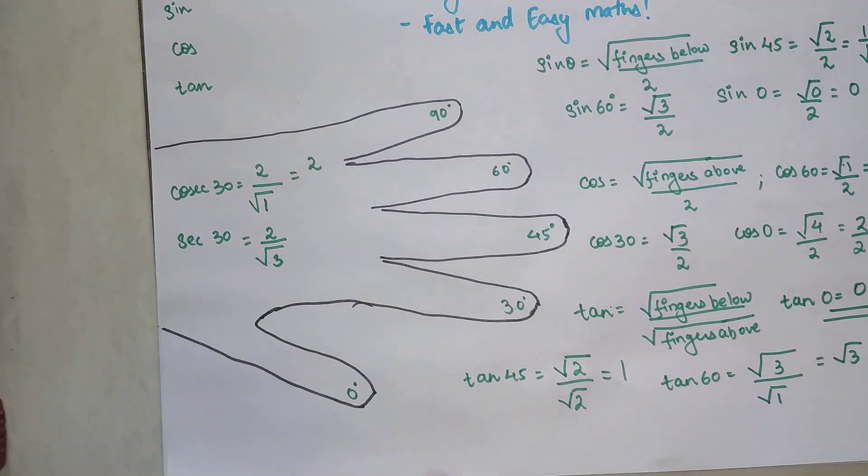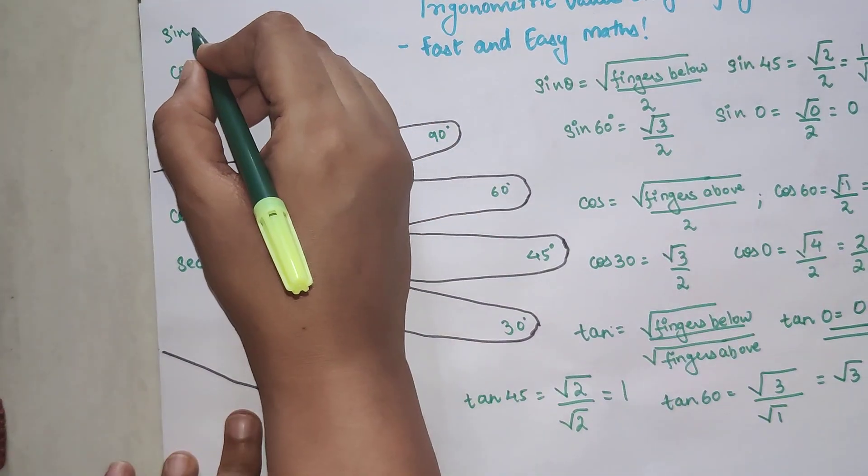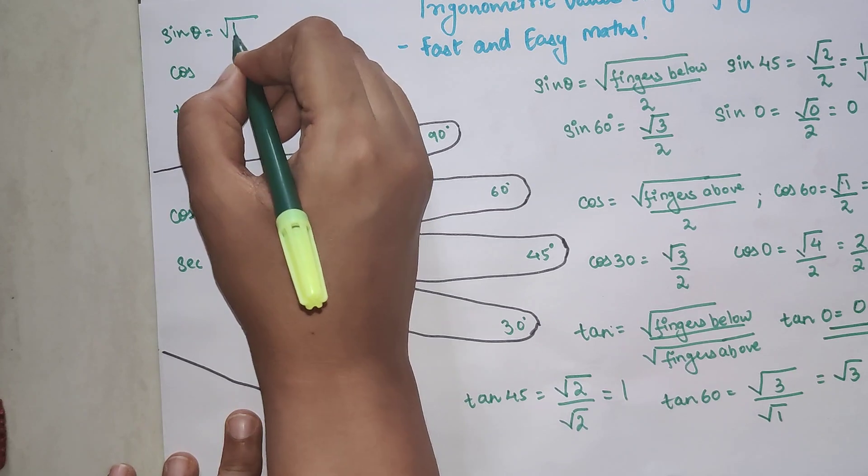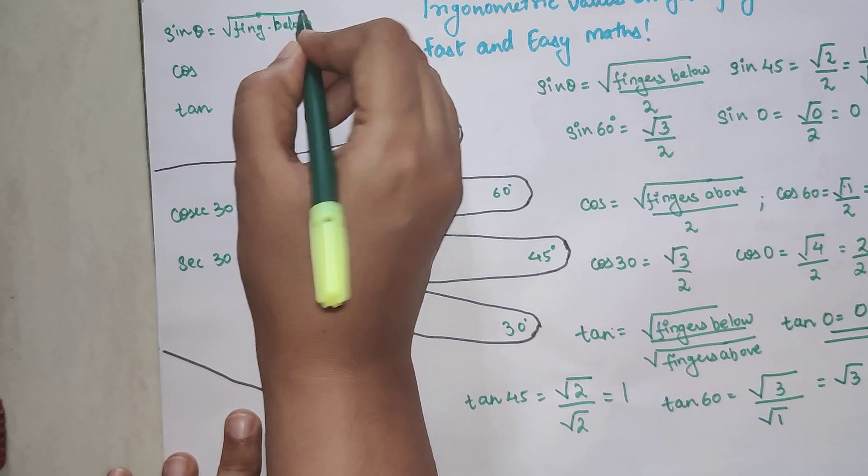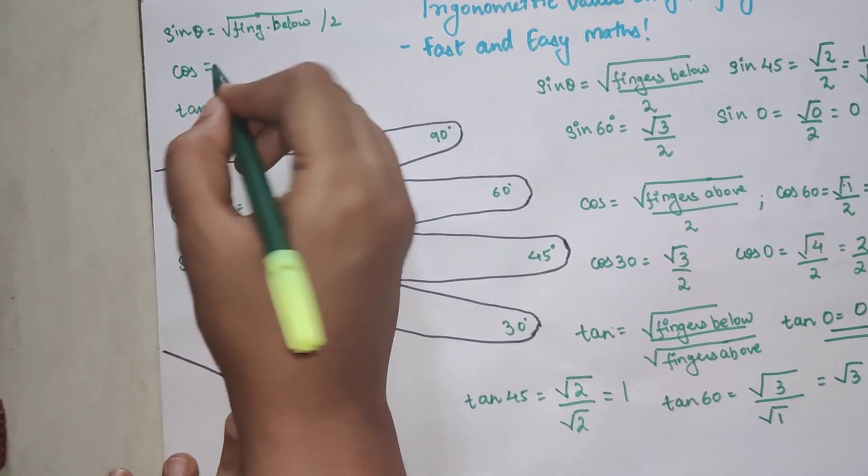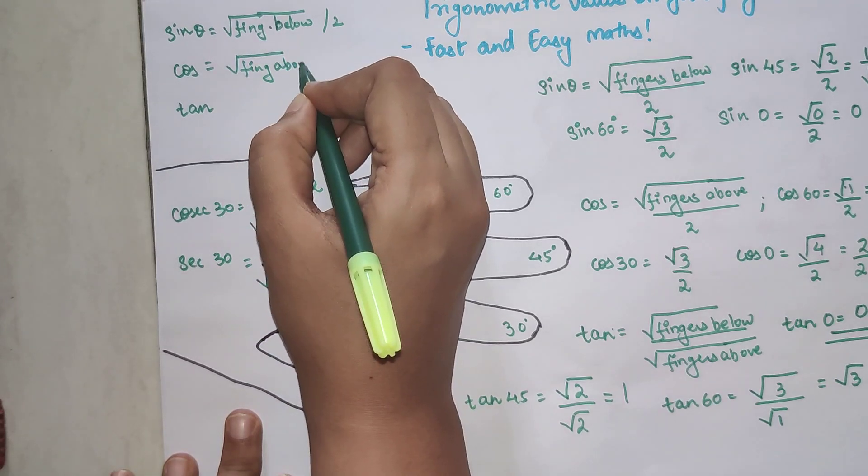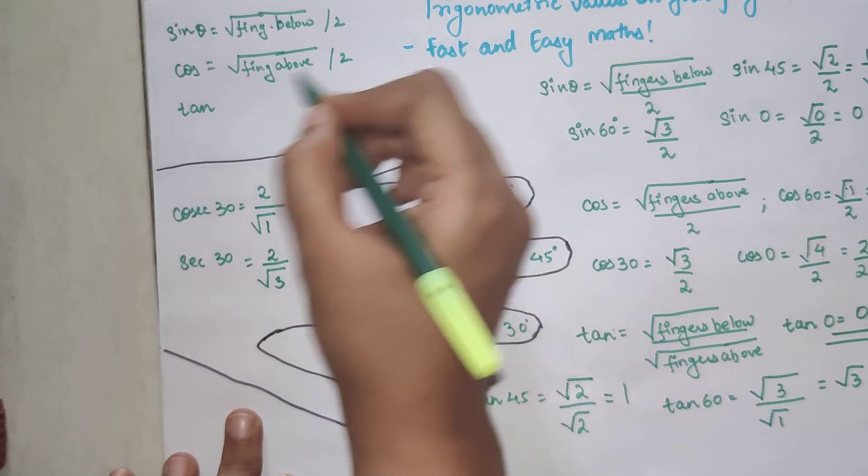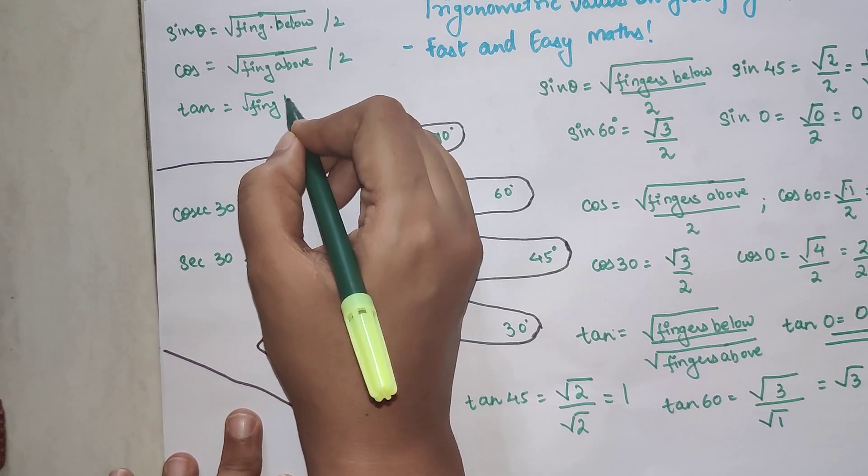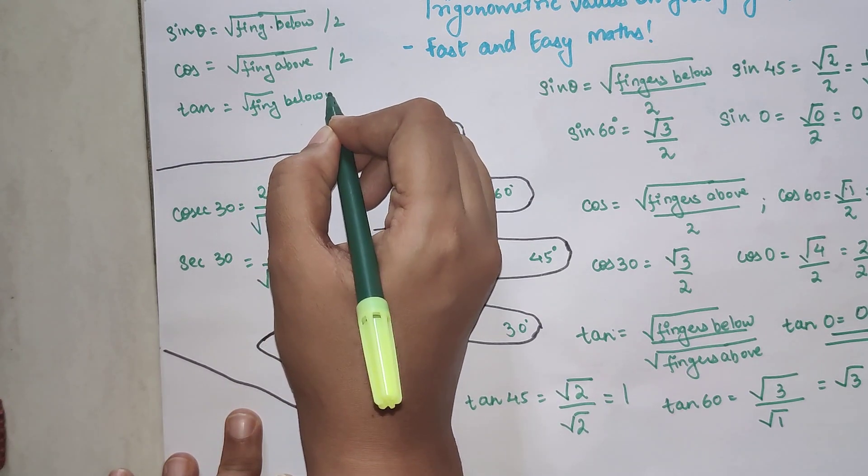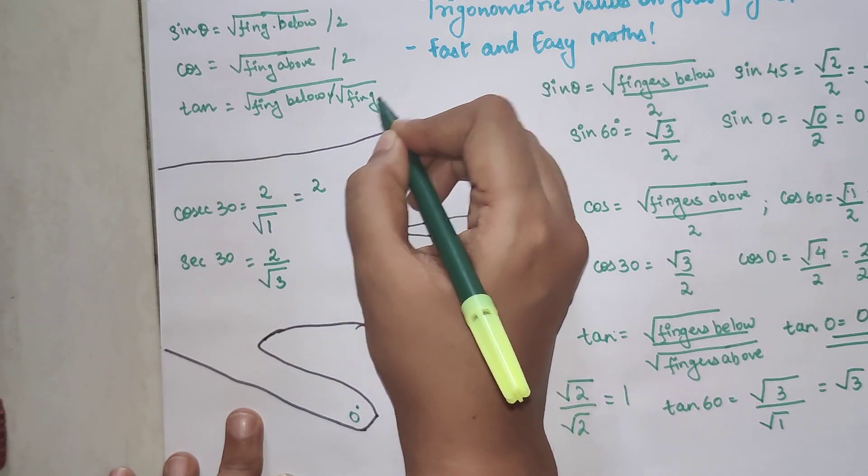Now also remember just very quickly revise. For sin theta the formula is nothing but root of fingers below upon 2. Here it is root of fingers above upon 2. And here it is nothing but root of fingers below upon root of fingers above.